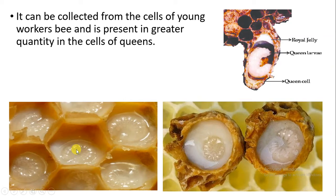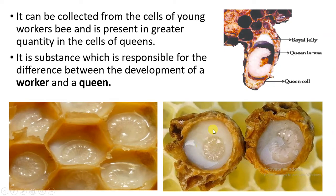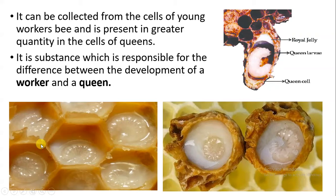We are able to collect the royal jelly from the cells in which the larval stages are developing. Here you can see these are the queen cells — this is the queen larvae which is surrounded by the jelly. We can also collect royal jelly from the larval stage of the workers. These are the places where we are able to collect this kind of jelly.